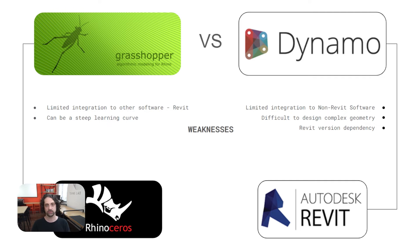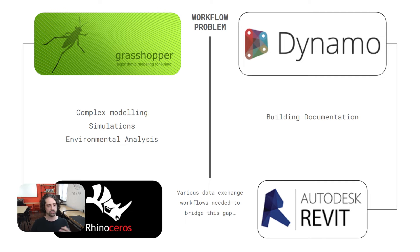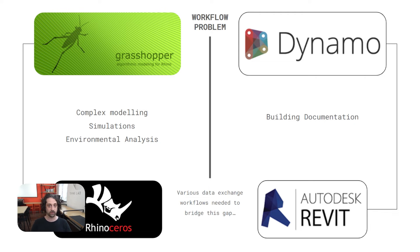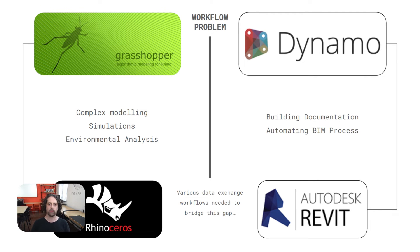So now we've seen the pros and cons: Grasshopper is very good at complex modeling, simulations, and environmental analysis with all its plugins, whereas Dynamo is very good at building documentation and automating BIM processes within the Revit environment.